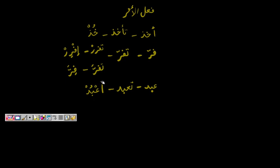Number three, عَبَدَ: mudhare' is تَعْبُدُ, made majzoom تَعْبُدْ, drop the ta, left with عْبُدْ — can't pronounce that, so add a hamza with dhamma: اُعْبُدْ رَبَّكَ — worship your Lord.